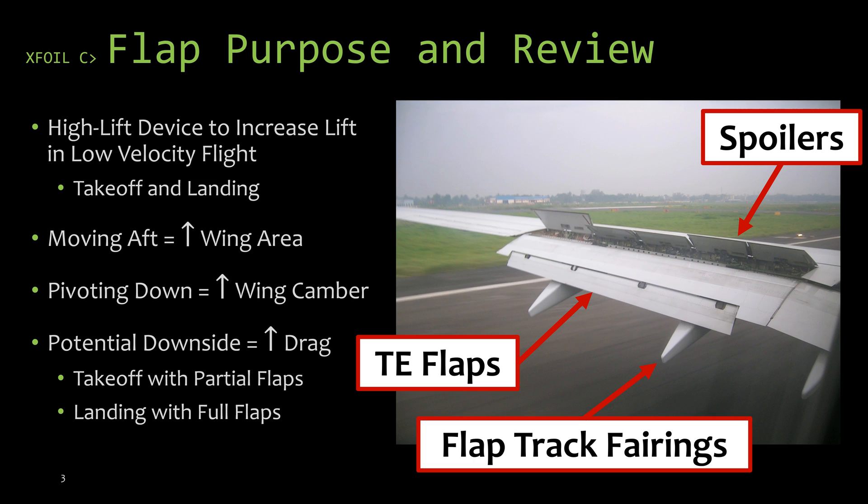Now a spoiler is usually up on top of the wing, and it is designed to spoil your airflow across the wing. That's why it's called a spoiler. The idea being that when your wheels touch down on the ground, you're trying to kill any lift that your wing is producing because that's going to put all of your weight onto your wheels and allow you to brake and stop faster. So that's what spoilers are used for.